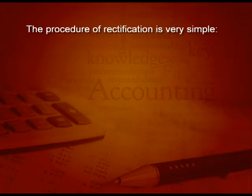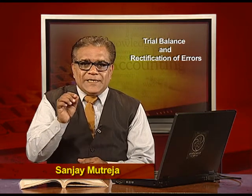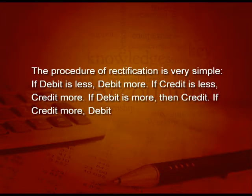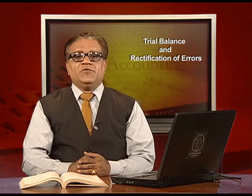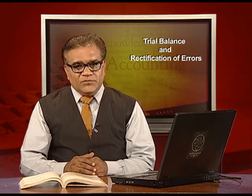The procedure of rectification is very simple. We have to look for and correct the error like this. Point number one, if debit is less, debit more. Second, if credit is less, credit more. But if debit is more, then credit it; and if credit is more, then you have to debit, because we have to correct what is more.